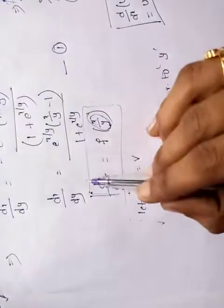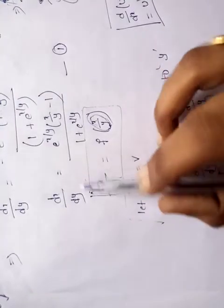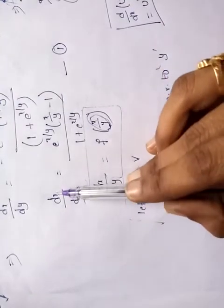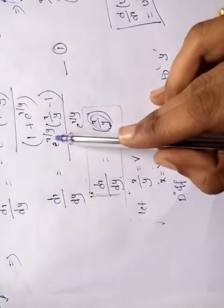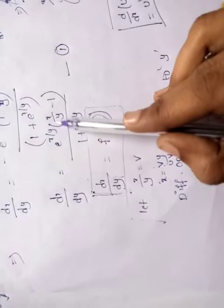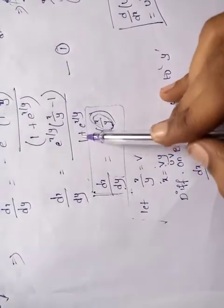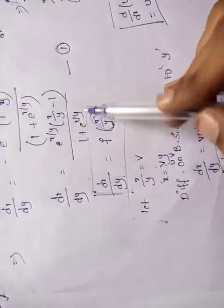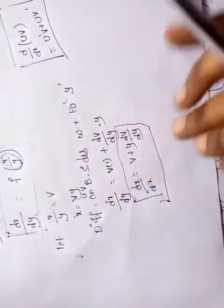Substituting into equation 1: dx/dy = e^(x/y) * (x/y - 1) / (1 + e^(x/y)), we replace x/y with v.